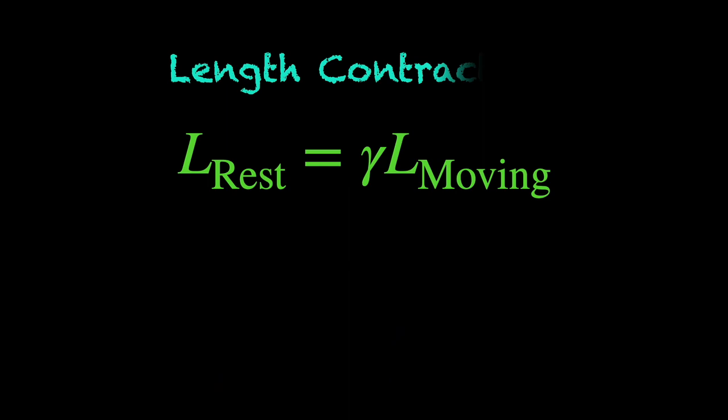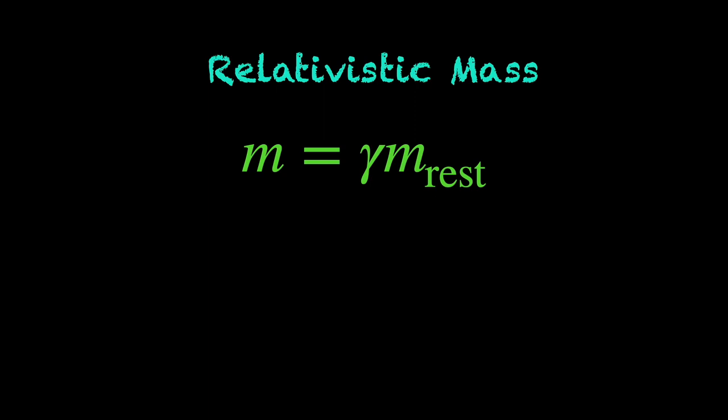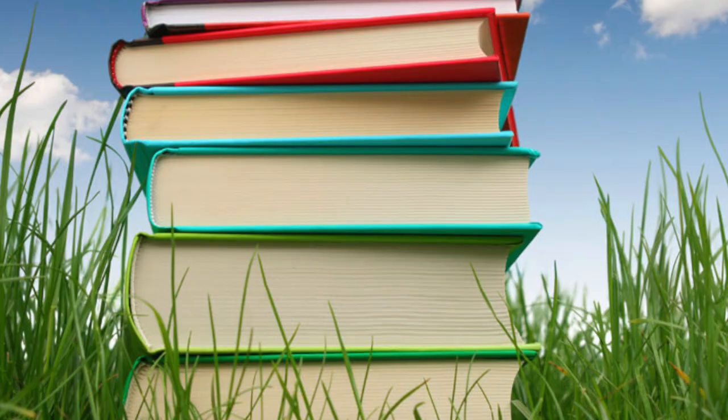In relativity, the Lorentz Factor is omnipresent. In the expressions of length contraction, time dilation, relativistic definition of energy and momentum, relativistic mass. Well, relativistic mass is a bad apple. We shall talk about it in another video. But the point is, look anywhere in relativity, you will see the Lorentz Factor hanging around. So, where does the Lorentz Factor come from and why do we see it ever so often in relativity?